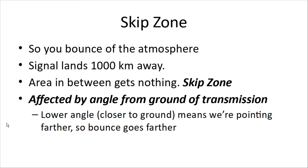We have a thing called skip zone. We're bouncing our signal off the atmosphere and it lands 1,000 kilometers away — so what about the area in between? It gets nothing. That's known as the skip zone, because due to the bounce it's not receiving. The skip zone will be affected by the angle from our ground transmission. A lower angle — closer to the ground — means we're pointing farther so the bounce goes farther. When bouncing off F1 and F2 zones and achieving 4,000 kilometers, we can do less by orienting our antenna towards a higher area to have a smaller skip zone.